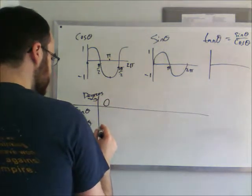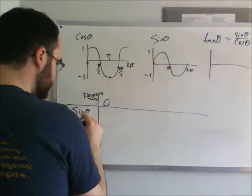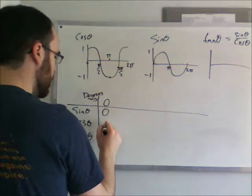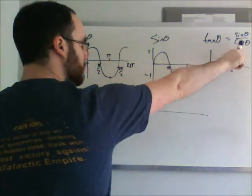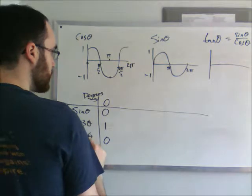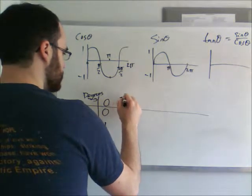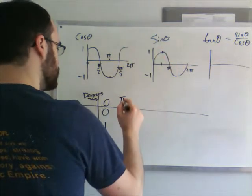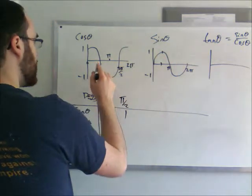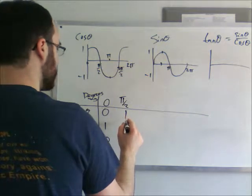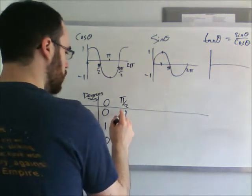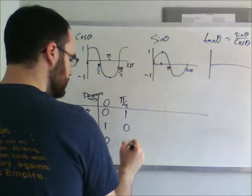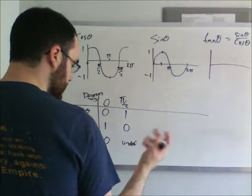So at 0 radians, we get sine of 0, which is 0. Cos of 0 is 1, and sine over cos, which is 0 over 1, is equal to 0. The next one is π/2. So at sine π/2, we have plus 1. Cos of π/2 is 0. So 1 divided by 0 is undefined. Right? Anything divided by 0 is undefined.